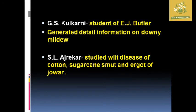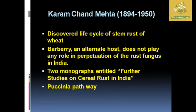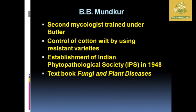GS Kulkarni, a student of EJ Butler, generated detailed information on downy mildew. SL Ajrekar studied the wilt disease of cotton, sugarcane, and jwar. Karam Chand Mehta (1894–1950) discovered the life cycle of stem rust of wheat on barberry and an alternate host, which does not play an important role in perpetuation of rust fungus in India. He created two monographic works on cereal rusts in India and described the Puccinia pathway.